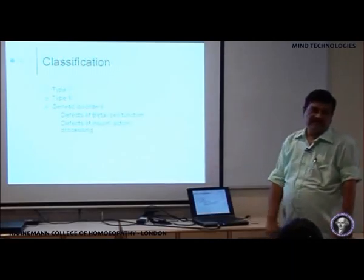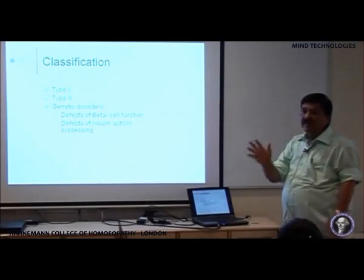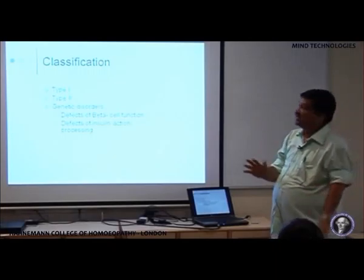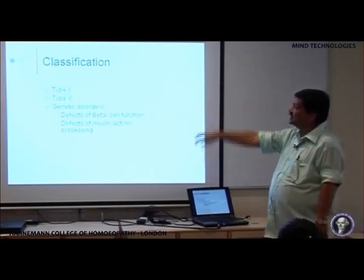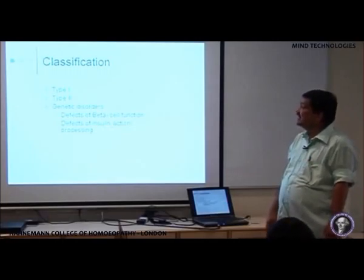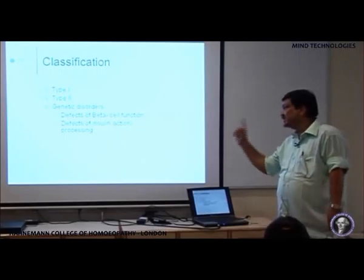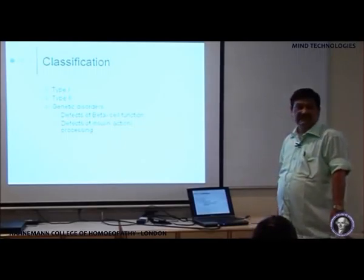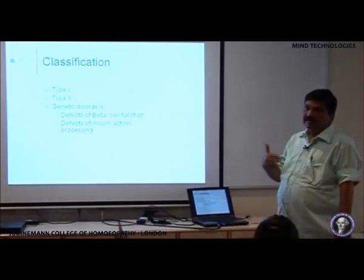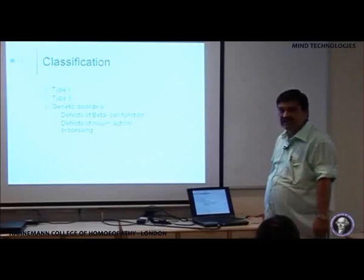Now, classification of diabetes mellitus. The classification is necessary because the treatment and pathogenesis of the various types of diabetes is different. We have primary type 1 diabetes mellitus, primary type 2 diabetes mellitus, and diabetes mellitus due to genetic disorders. Under these genetic disorders we can have defects of the beta cell function and defects of the insulin action or insulin processing — meaning the action of insulin on the insulin receptors — both of which can be affected due to genetic disorders.